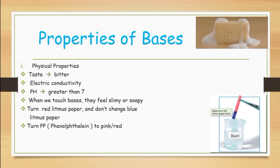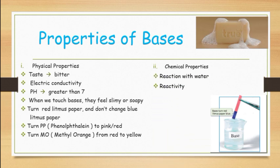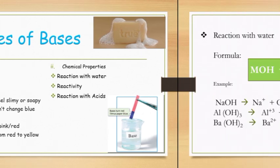Bases will turn phenolphthalein from colorless to pink or red. Bases also turn methyl orange from red to yellow. The chemical properties of bases involve reaction with water, reactivity, and reaction with acids.